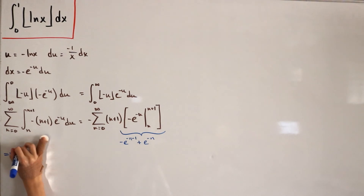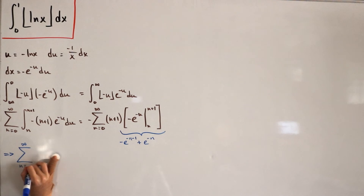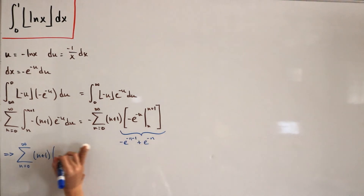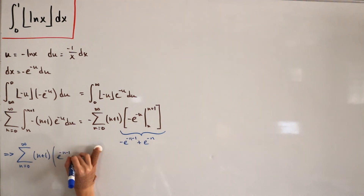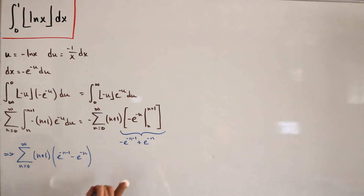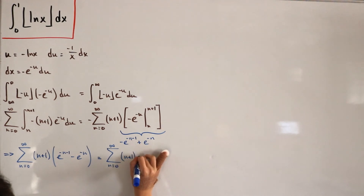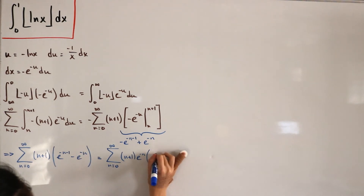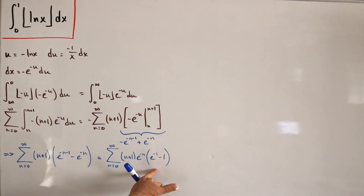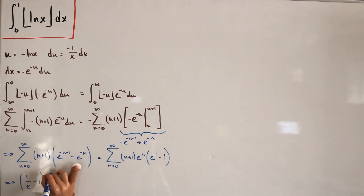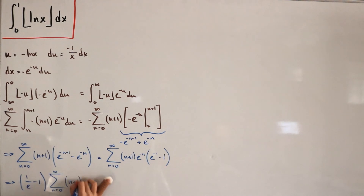After distributing the outer negative and simplifying signs, we arrive at a positive sum from n = 0 to ∞ of (n+1) times [e^(-n) - e^(-(n+1))]. Factoring out e^(-n), we get the sum of (n+1) · e^(-n) · (e^(-1) - 1). Since (e^(-1) - 1) is a constant, it comes outside the sum, rewritten as (1/e - 1). The remaining sum is Σ(n+1) · (1/e)^n.